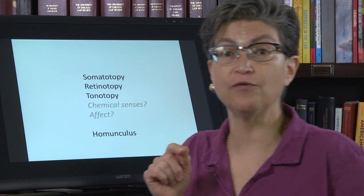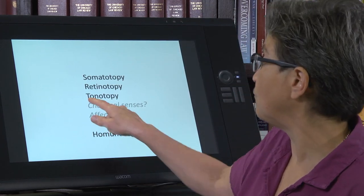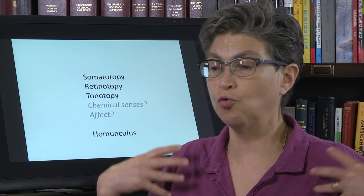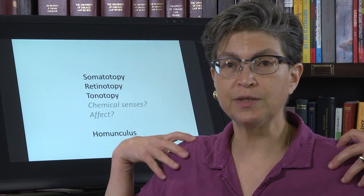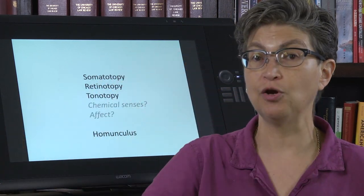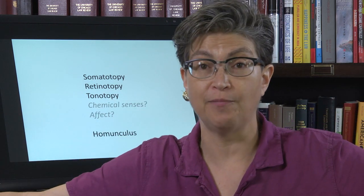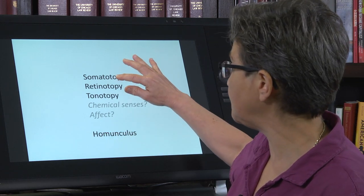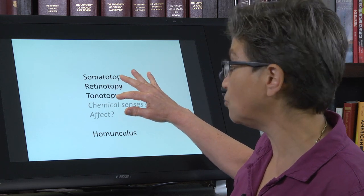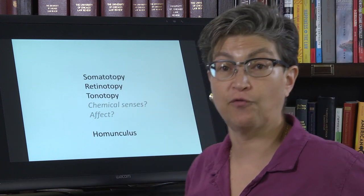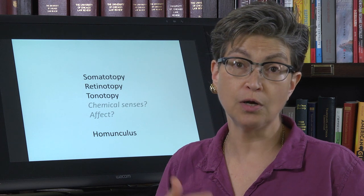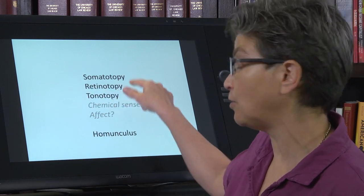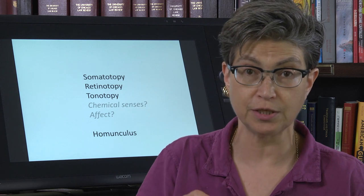For the visual system there is retinotopy; for the auditory system there is tonotopy; and for the motor system there is what's called a homunculus — mapping movements of the arms, hands toward the mouth, and movements away from the body. The homunculus is the motor map, somatotopy is the somatosensory map, retinotopy is the visual map, and tonotopy is the auditory map. We don't yet know if there are comparable maps for chemical senses or affect. In the next section we'll examine retinotopy and go deep into the visual pathway.